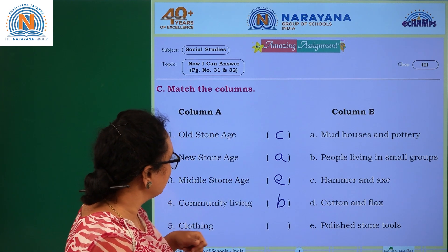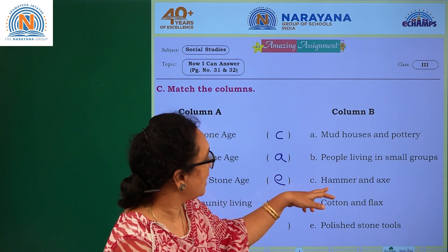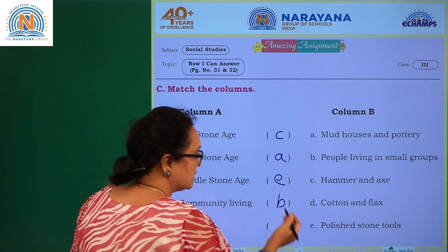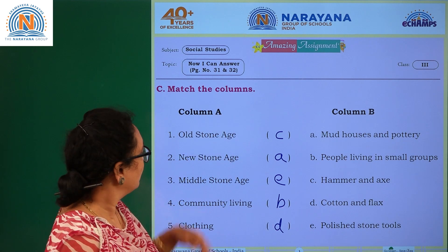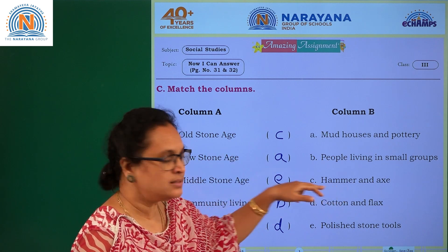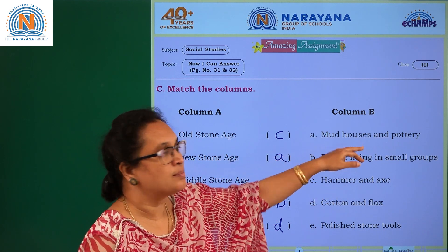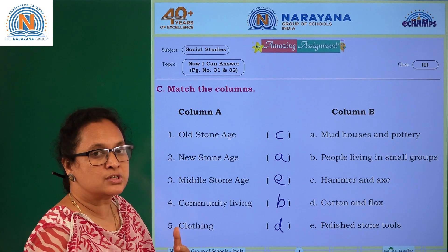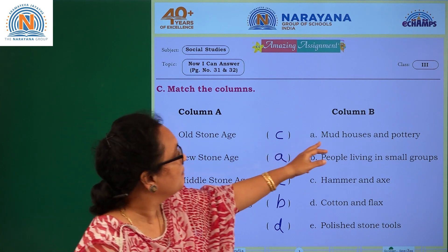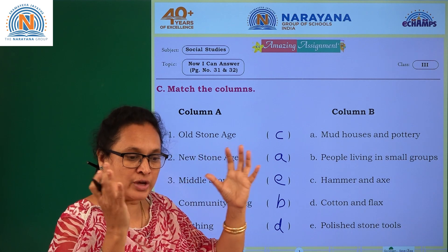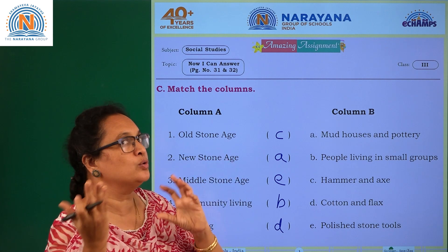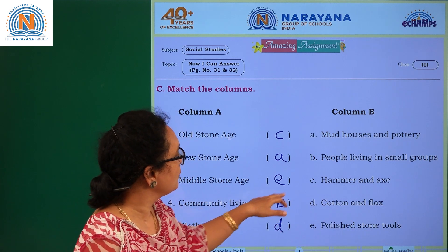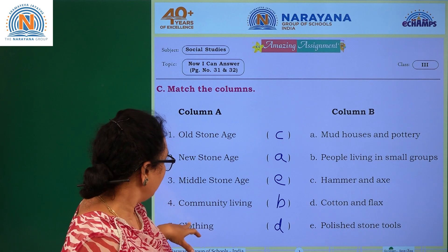Coming to the last one — clothing. The options remaining are cotton and flakes — so clothing is option D, cotton and flakes. To recap: old stone age is C (hammer and axe heads), new stone age is A (mud houses and pottery), middle stone age is E (polished stone tools), community living is B (people living in small groups), and clothing is D (cotton and flakes).